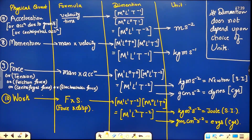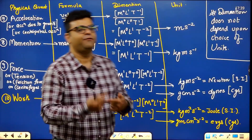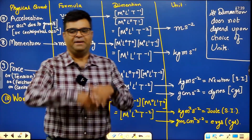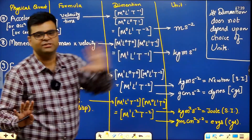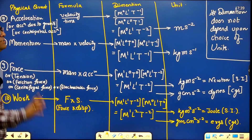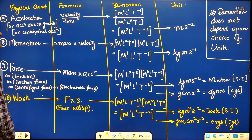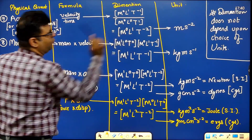Acceleration is the rate of change of velocity. Whether you say acceleration due to gravity, centripetal acceleration — all are acceleration, so all have the same dimensions. Acceleration = velocity upon time. Velocity dimensions are M⁰L¹T⁻¹, time is M⁰L⁰T¹. Dividing gives M⁰L¹T⁻².